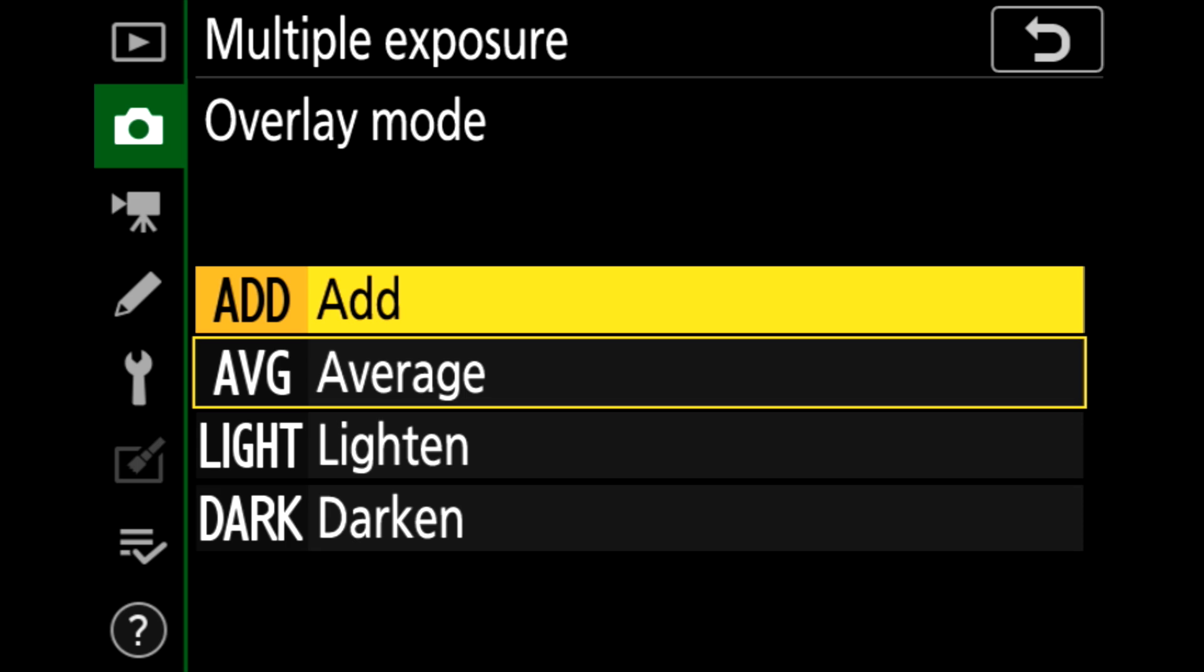So I think the easiest way to look at this is to explain it on a single pixel level. We're going to assume that we are creating two exposures, we're combining them into one exposure, and we're going to look at what is happening to each individual pixel in those exposures. We're going to start with additive, which is the analog or traditional way of creating multiple exposures with film.